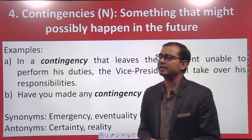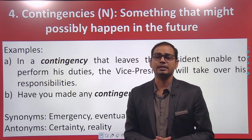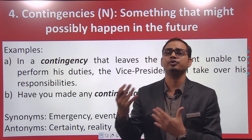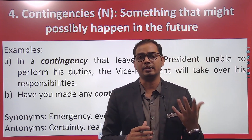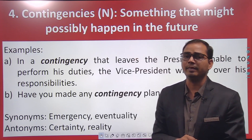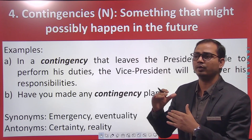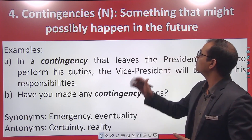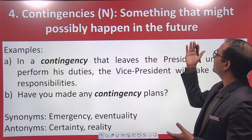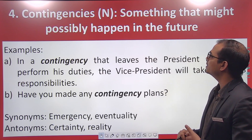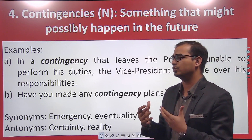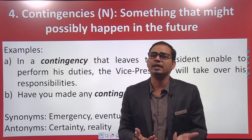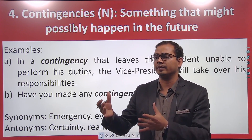The next word in the list is 'contingency.' Contingency means an unexpected situation or emergency — aisi koi situation jo apne aap ho jaye, something that might possibly happen in the future. A contingency fund is one that you keep aside for such unexpected situations.